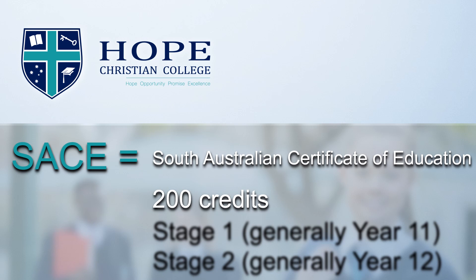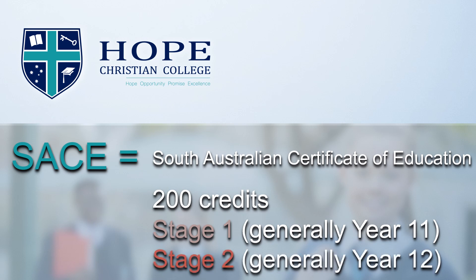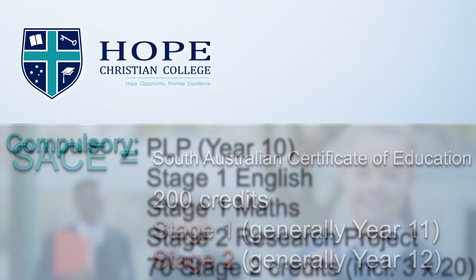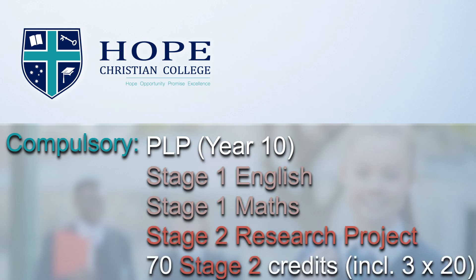There are two stages to the SACE. Stage 1 is generally Year 11 courses, and Stage 2 is generally Year 12 courses. The SACE starts in Year 10 with the compulsory subject PLP, which is Personal Learning Program. Other compulsory aspects of the SACE include Stage 1 English, Stage 1 Maths, the Stage 2 Research Project, and students must also complete 70 credits in Stage 2, including a minimum of three 20-credit or full-year subjects.